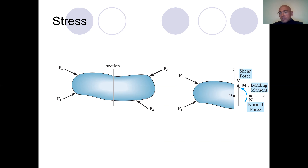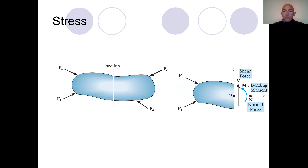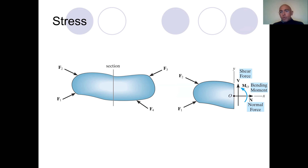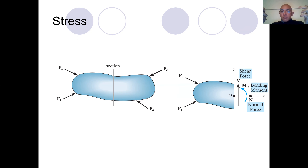When we have a structure and apply forces with our hands — for example, bending a steel ruler — if you think that this beam is made of springs, some of the springs will be shortened and others will be elongated. The distance between some atoms increases and the distance between others decreases.